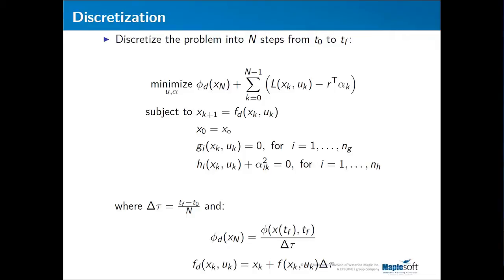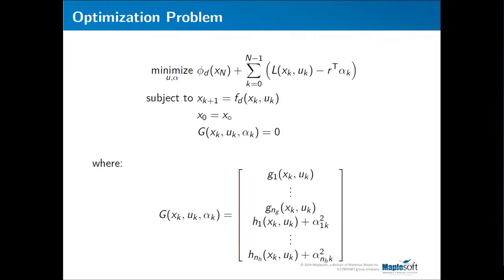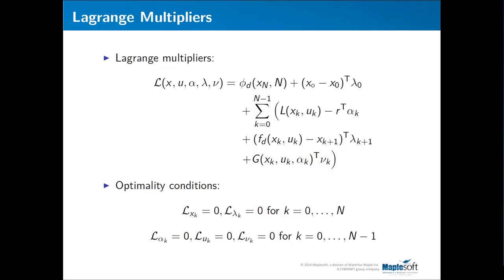Now we discretize the problem into N time steps from t0 to tf. The main things that change in the optimization problem are the cost for the final state, now defined as Phi_D, and the system equations, now written as difference equations, where Phi_D and F_D are functions of delta tau, our time step. We can then summarize the optimization problem as one subject to only equality constraints, with all equality constraints put into one vector called capital G. To solve this, we use Lagrange multipliers.